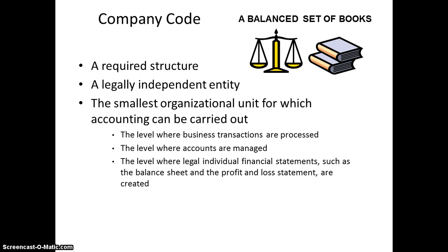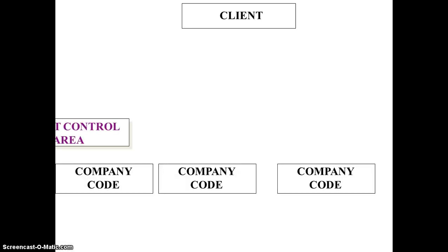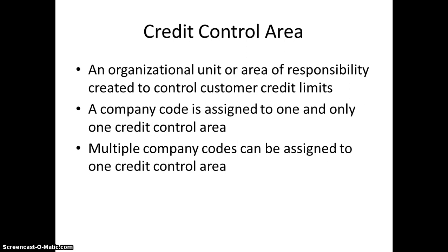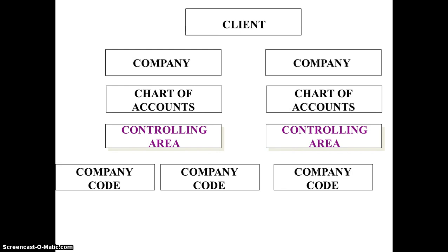So what is company code? It is a required structure — a legally independent entity — the smallest organizational unit for which accounting can be carried out. It is the level where business transactions are processed, accounts are managed, and legal individual financial statements such as balance sheet and profit and loss statements are created. So legal entity is company code. For a company code, we maintain the chart of accounts and also a credit control area. The credit control area is an organizational unit created to control customer credit limits. This is mandatory for sales configurations — if you don't assign the credit control area, you cannot create records or accounts in the sales and distribution module. So whatever configurations we do in FI will be affecting the other modules directly.